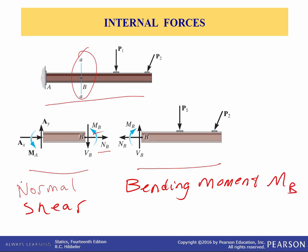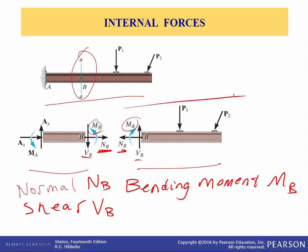The force component V sub B we call the shear force, and the couple moment M sub B we call the bending moment. The force components prevent relative translation between the two segments, and the couple moment prevents relative rotation. According to Newton's third law, these loadings must act in opposite directions on each segment — NB points right on one segment and left on the other. We can determine N, V, and M by applying the equations of equilibrium to the free body diagram of either segment, choosing whichever is easier.